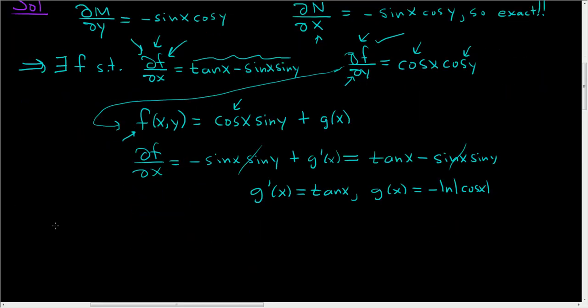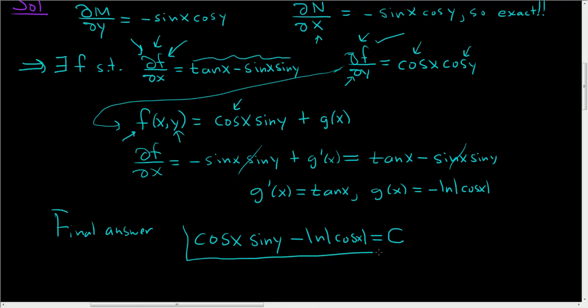So the final answer, here it is. Here's F. So it's cosine X sine Y and then minus the natural log of the absolute value of cosine. And we set that equal to capital C. So that is the solution to the differential equation. I hope that made sense.